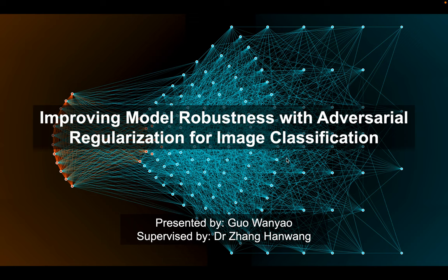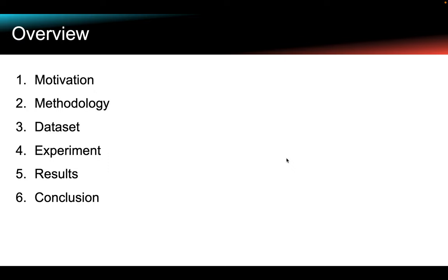Hi everyone, my name is Guo Wanyao and I'm presenting my final year project: Improving Model Robustness with Adversarial Regularization for Image Classification. In this video, we will go through six parts.